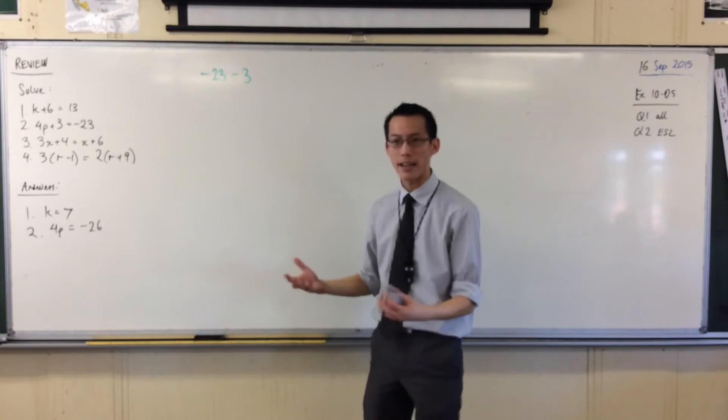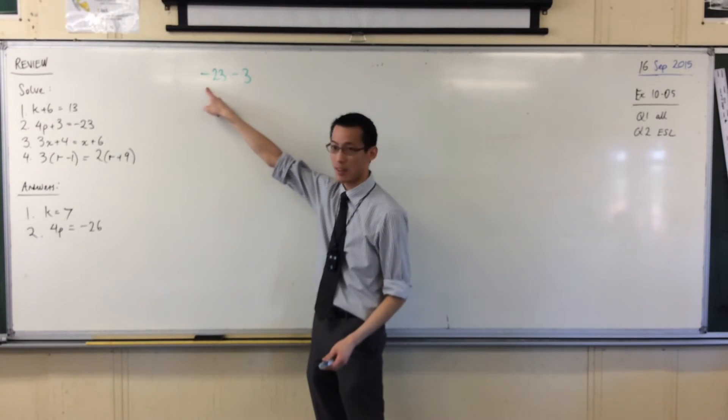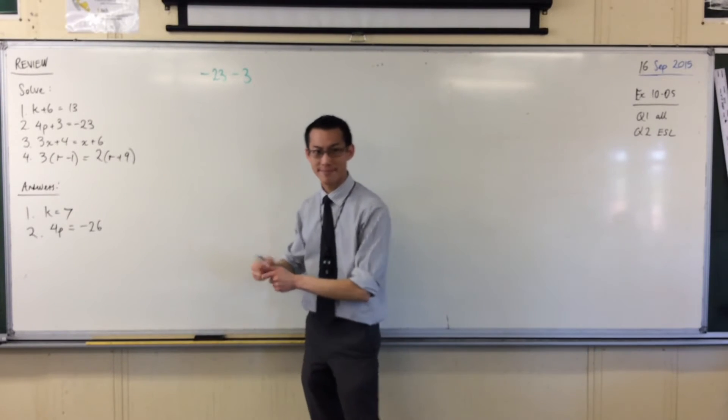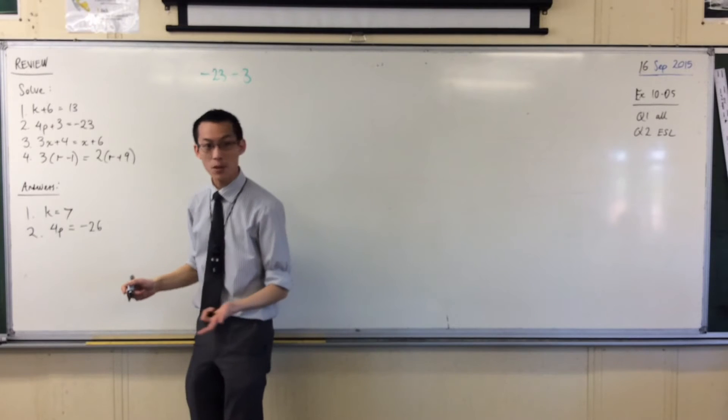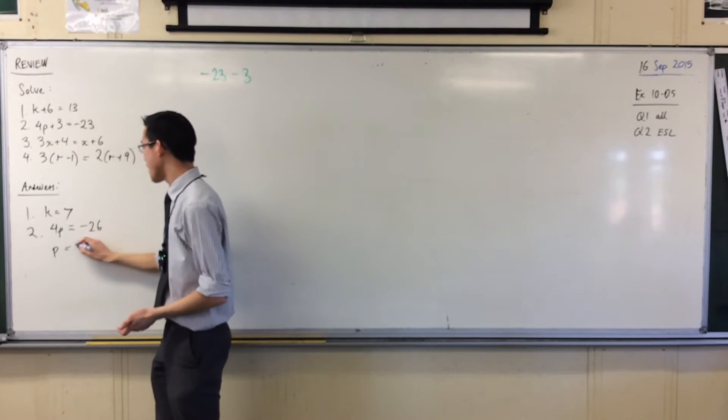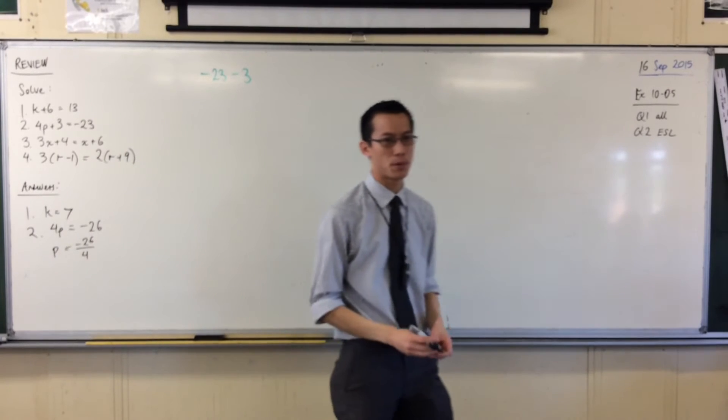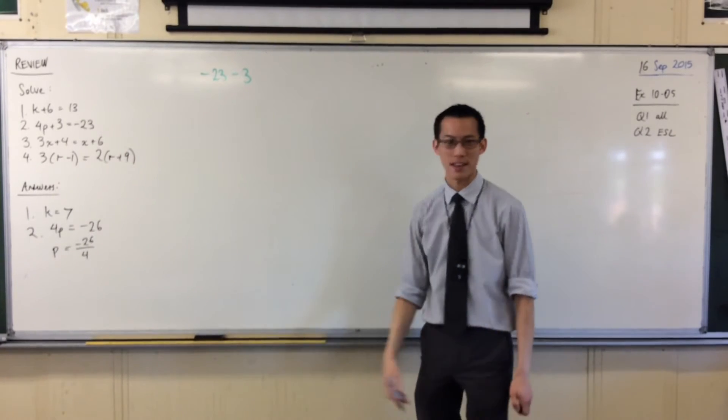But because it's negative, it actually gets more and more negative. Next step. I should divide both sides by four. Now, when you do that, 26 doesn't go evenly into fours. It's not a multiple of four. So what would you do for this next step? Yeah, Jordan.